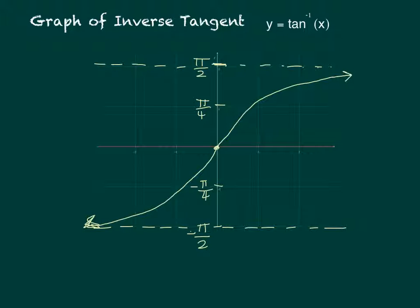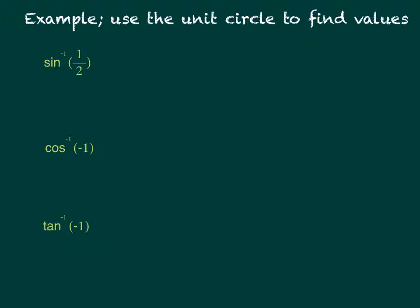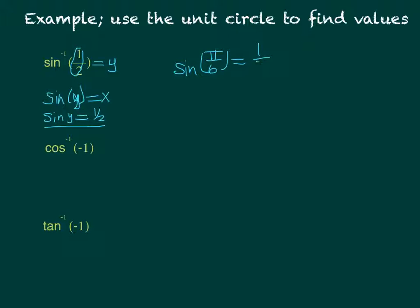Now we use the unit circle to find values of inverse functions. For inverse sine of 1/2, this is equivalent to asking: sine of y equals 1/2, where y must be in the interval negative pi over 2 to pi over 2. Looking at the unit circle in that interval, sine of pi over 6 equals 1/2, so the answer is y equals pi over 6.